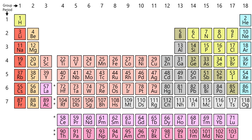Placing elements into categories and subcategories based just on shared properties is imperfect. There is a large disparity of properties within each category with notable overlaps at the boundaries, as is the case with most classification schemes. Beryllium, for example, is classified as an alkaline earth metal, although its amphoteric chemistry and tendency to mostly form covalent compounds are both attributes of a chemically weak or post-transition metal. Radon is classified as a nonmetallic noble gas yet has some cationic chemistry that is characteristic of metals. Categorizing the elements in this fashion dates back to at least 1869, when Hinrichs wrote that simple boundary lines could be placed on the periodic table to show elements having shared properties.